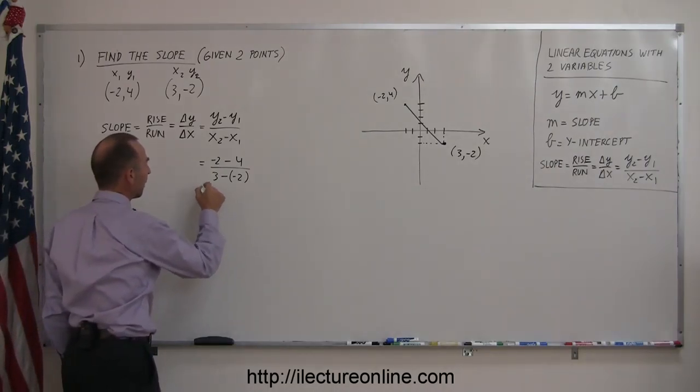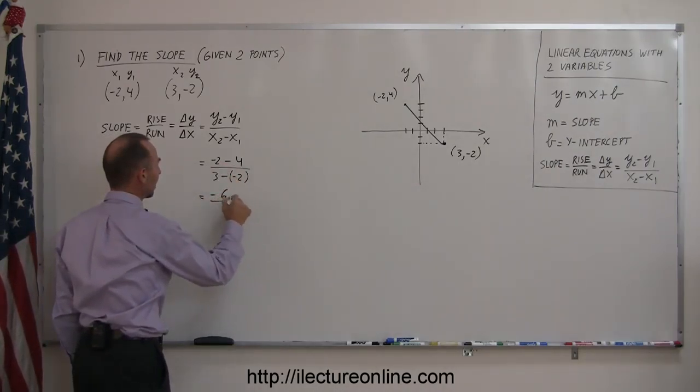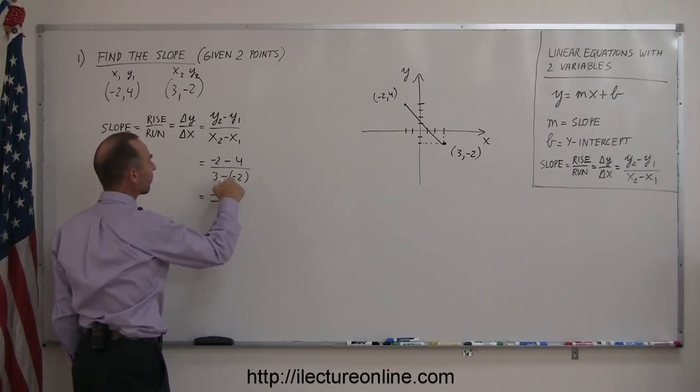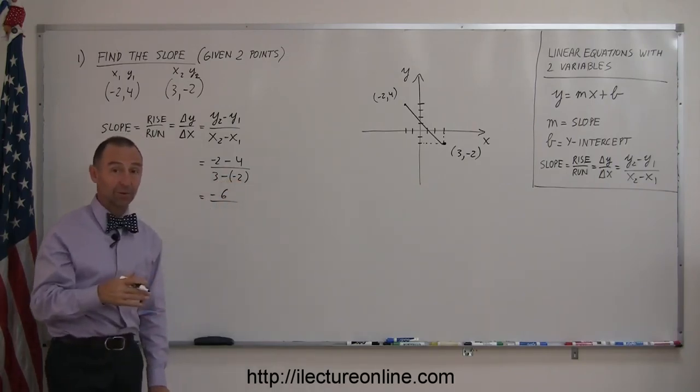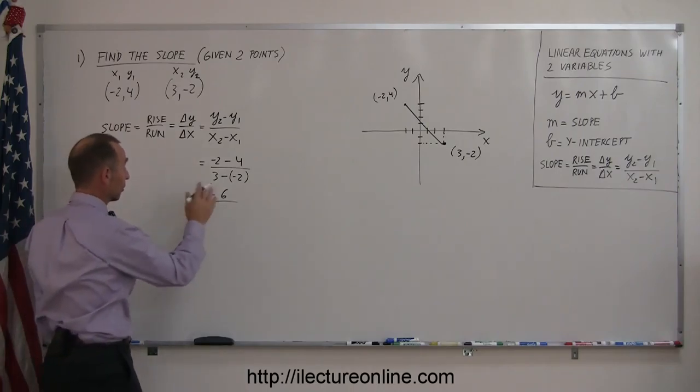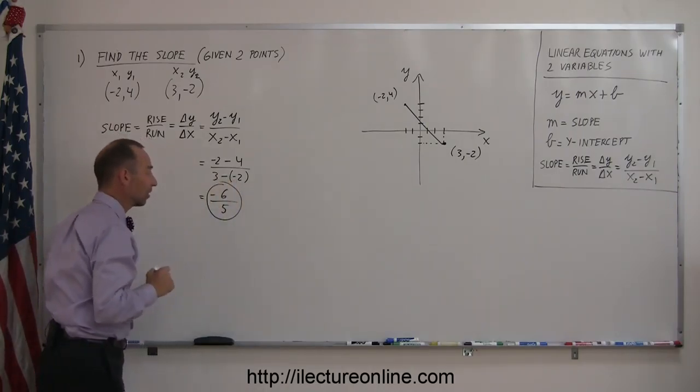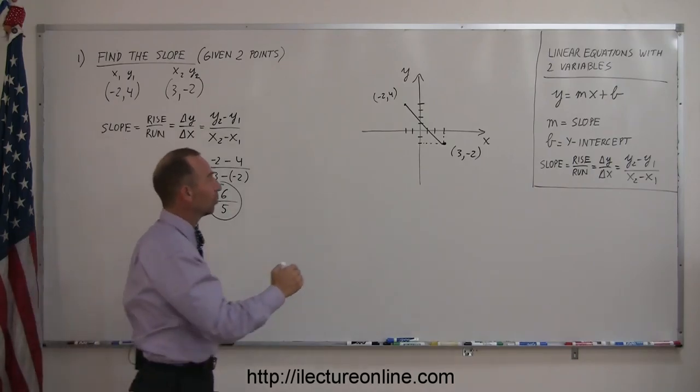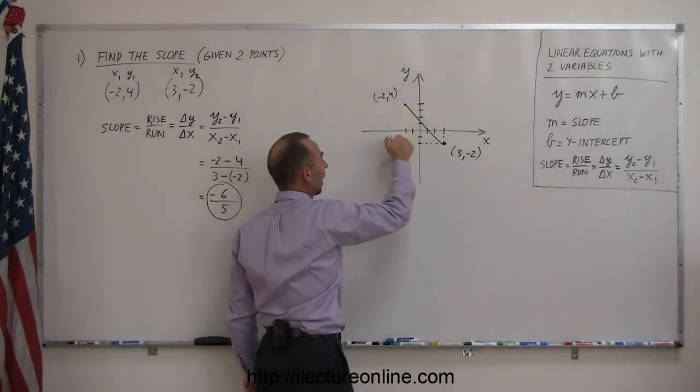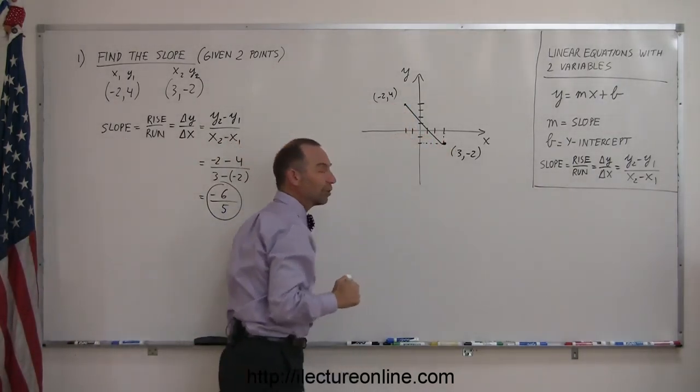Working this out, we get minus 2 minus 4 is minus 6, divided by 3 minus a minus 2. So subtracting a negative number is like adding the positive number, so this is 3 plus 2 or 5. So the slope is minus 6 over 5. That means we drop 6 units as we move to the right 5 units.